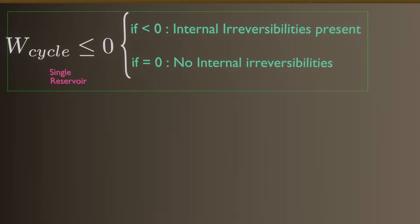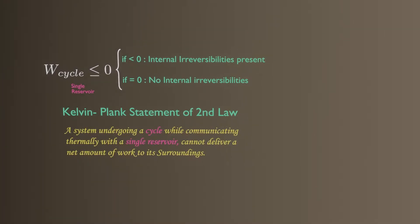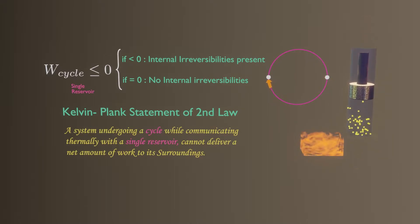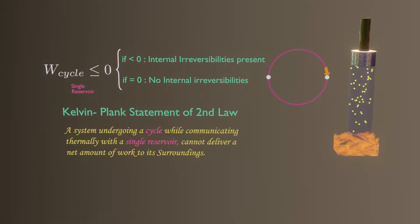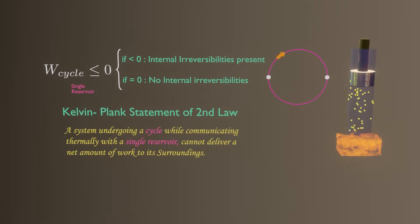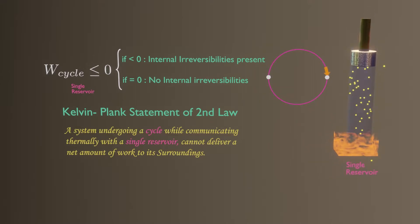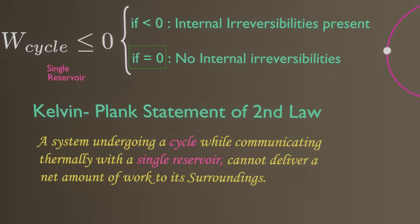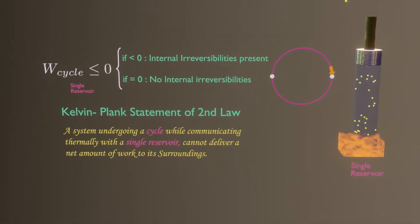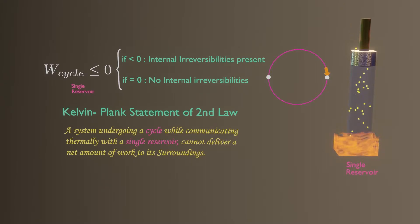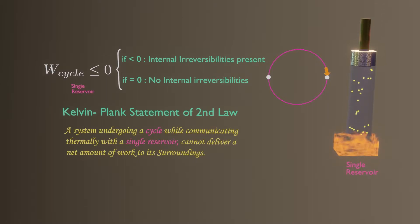This inequality is developed due to the second law. According to the Kelvin-Planck statement, a system undergoing a cycle while communicating thermally with a single reservoir cannot deliver a net amount of work to its surroundings. So for a device undergoing a thermodynamic cycle process and getting heat from a single reservoir, the work done should be either zero or negative. Total work done would be zero if the process is internally reversible, or negative if irreversibilities exist, but it would never be a positive quantity.